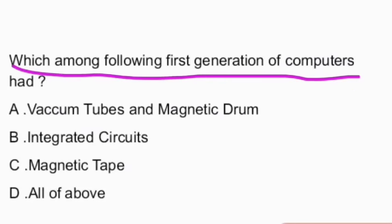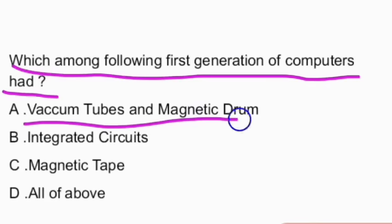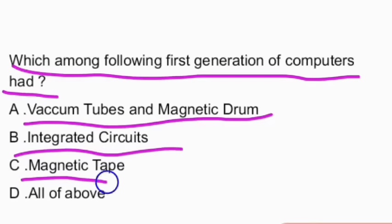Next question: which among the following did the first generation of computers have? The options given are vacuum tubes and magnetic drum, integrated circuits, magnetic tape, or all of the above. The answer is option A — the first generation of computers consisted of vacuum tubes and magnetic drum.